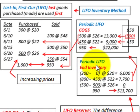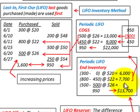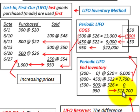Looking at our periodic LIFO ending inventory: the most recent purchases were used first, so we have no inventory sitting in our recent purchases. But as we go to older purchases, we're going to have some ending inventory. So our ending inventory using the LIFO method is $13,700.